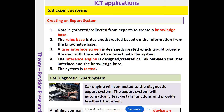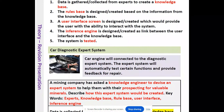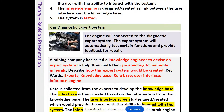How do we create an expert system? First, we gather data from experts — for a medical expert system, that would be doctors in that field — to create the knowledge base. The rules base is then designed based on the information in the knowledge base. Think of it like chess: the computer can't move pieces in any direction; it must follow rules. A user interface is then designed to allow the user to interact with the system. An inference engine is created as a link between the user interface and the knowledge base. Finally, the system is tested with possible inputs to verify correct outputs.